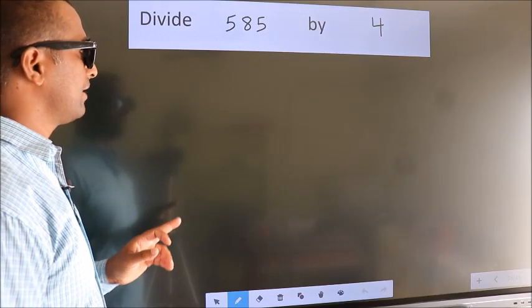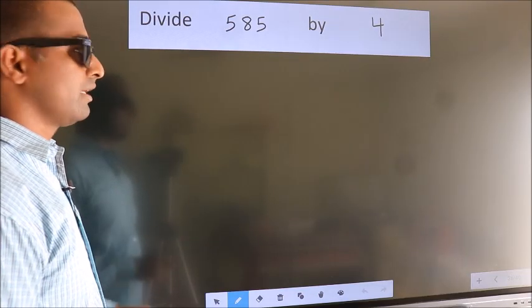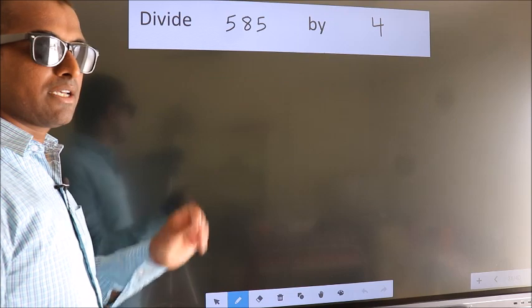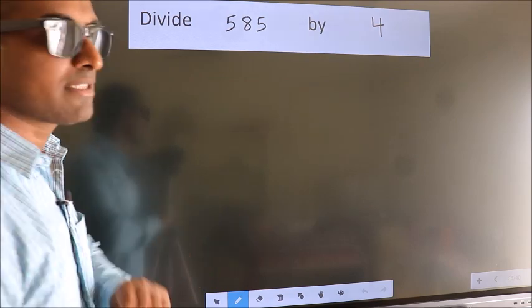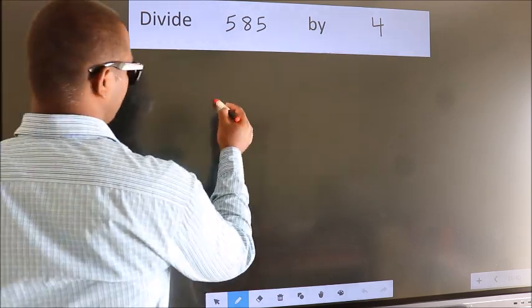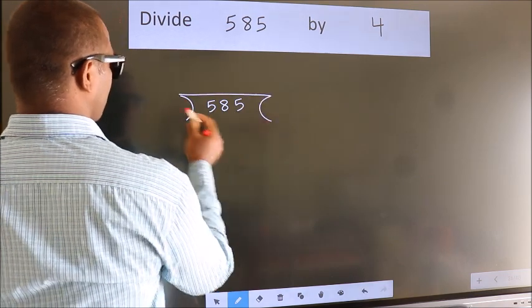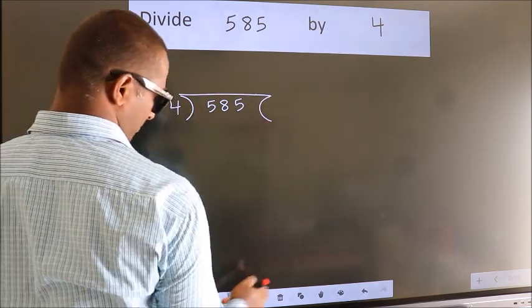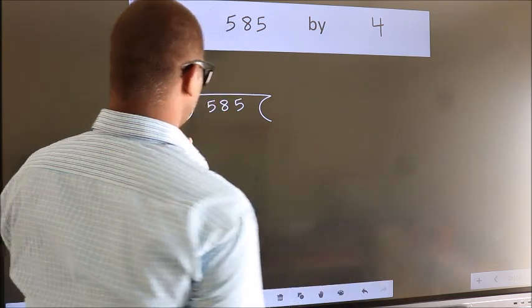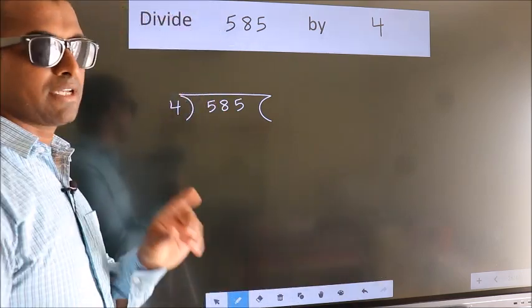Divide 585 by 4. To do this division, we should frame it this way: 585 here, 4 here. This is your step 1.